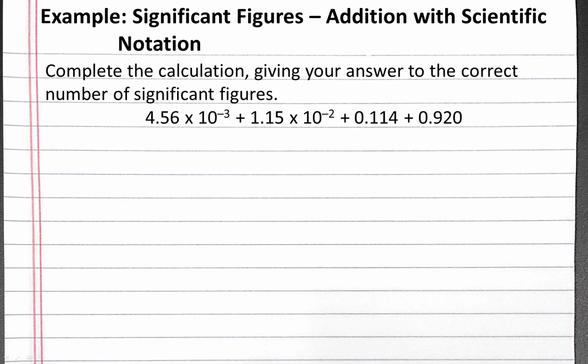Our problem reads: complete the calculation giving your answer to the correct number of significant figures. The calculation is 4.56 times 10 to the negative third plus 1.15 times 10 to the negative second plus 0.114 plus 0.920.